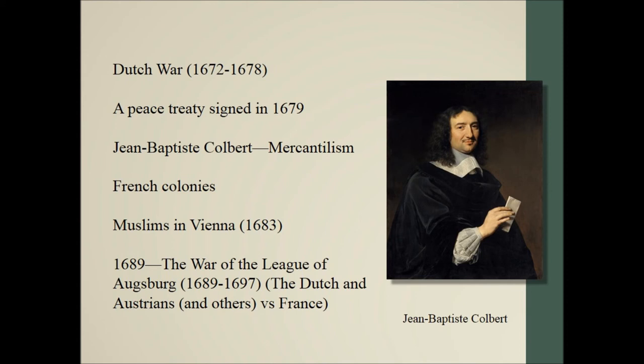Colbert brought mercantilism to France and it was fairly successful as an economic theory. As we'll see, many other countries adopted this. Part of mercantilism is starting colonies, so you have colonies starting in Canada that were fairly successful for the French until the wars that happened in the 1700s, which we'll talk about.